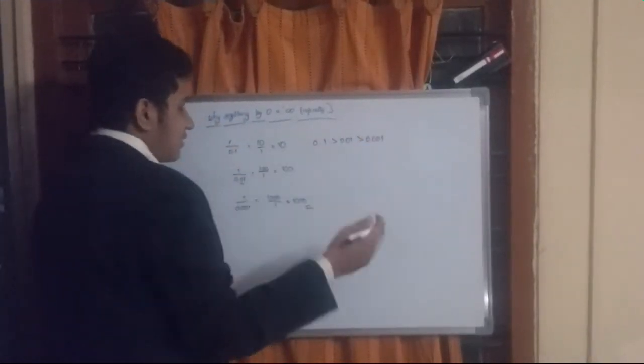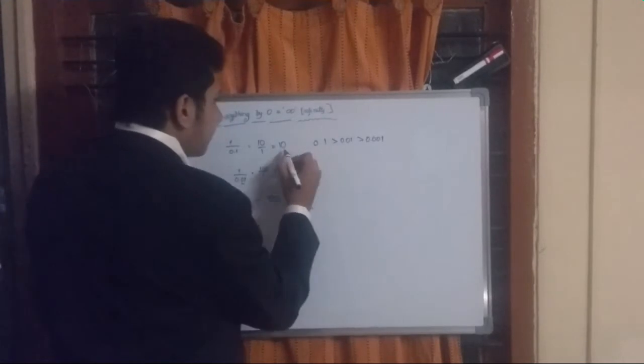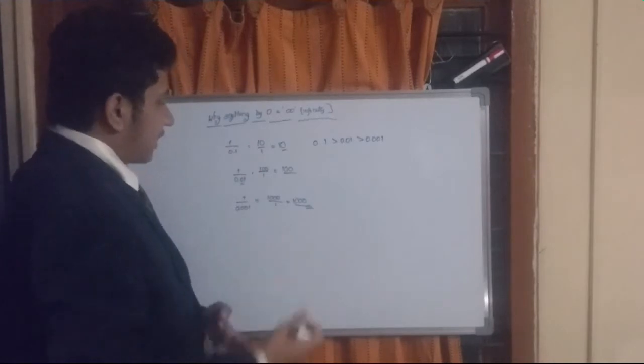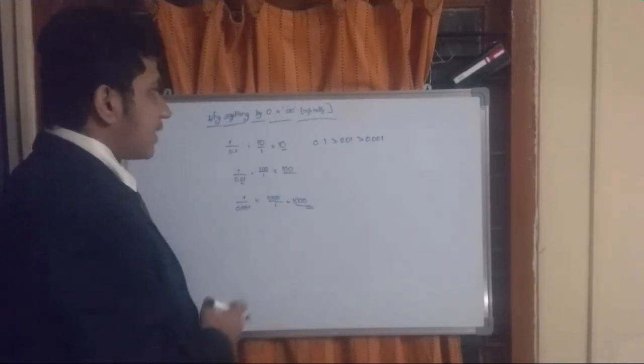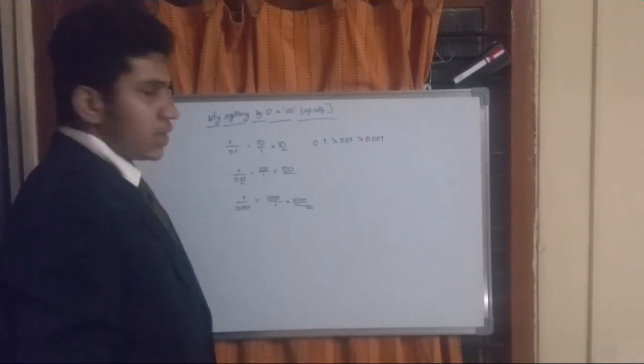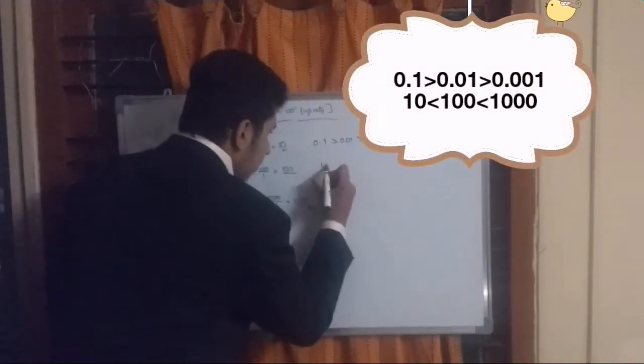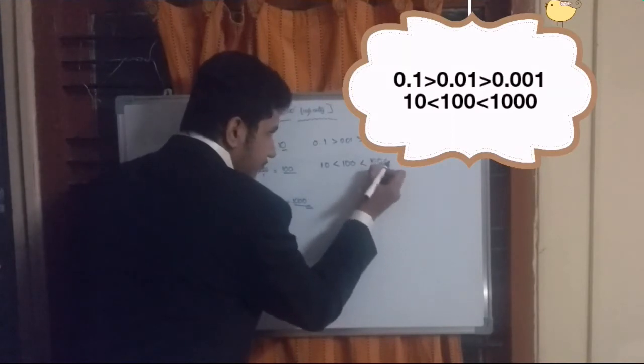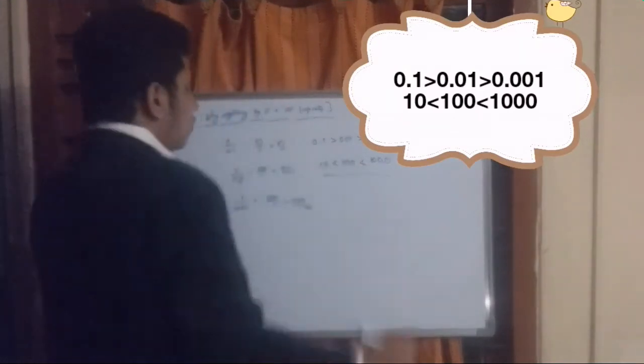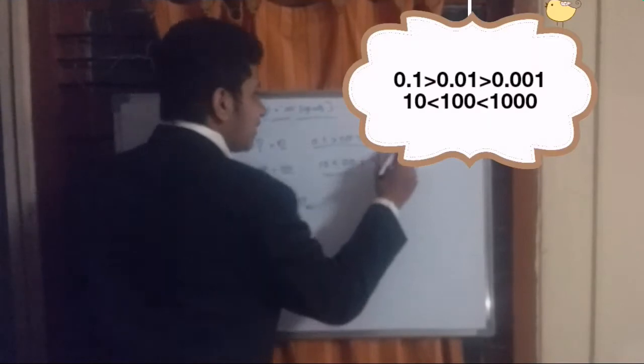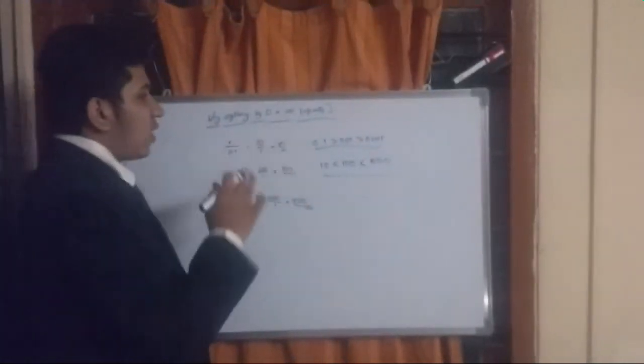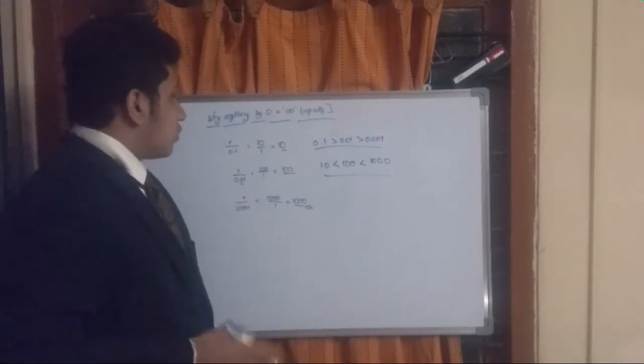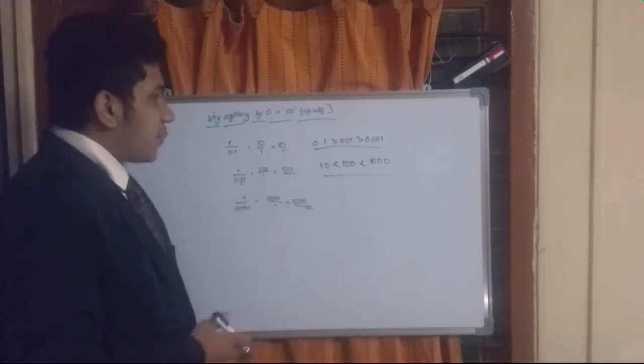As a result, the number of zeros is increasing. More zeros are increasing, and therefore the value of the number is increasing. So 10 is smaller than 100, which is smaller than 1000. As you can see here, it's exactly the reverse. Here 0.1 is greater than 0.01, which is greater than 0.001. Quite opposite to that: 10 is less than 100, which is less than 1000.